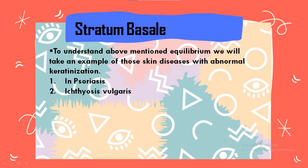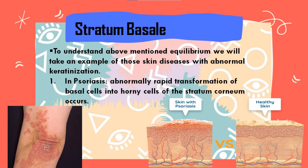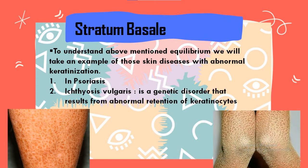To understand this equilibrium, we can look at examples of skin diseases with abnormal keratinization. The first is psoriasis, in which abnormally rapid transformation of basal cells into horny cells of the stratum corneum occurs, as you can see in the picture. The second is ichthyosis vulgaris, commonly known as fish skin disease, which is a genetic disorder that results from abnormal retention of keratinocytes, as also shown in the picture.